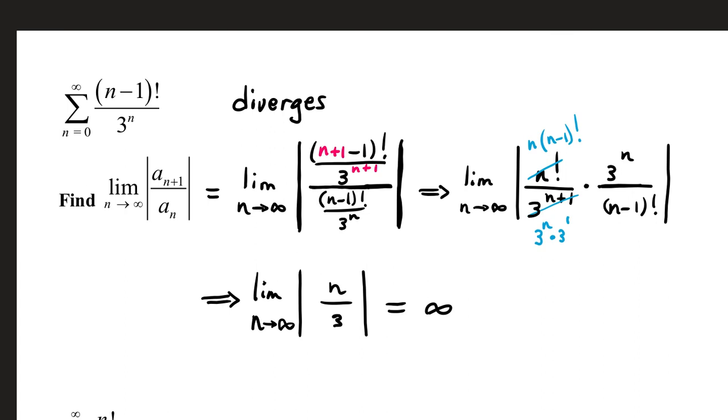So, three to the n cancels top and bottom, n minus one factorial cancels top and bottom. All that leaves is an n in the top and a three in the bottom. Well, the limit of absolute value of n over three, that's going to go to infinity. So, this series diverges.